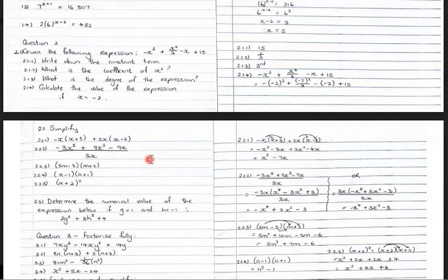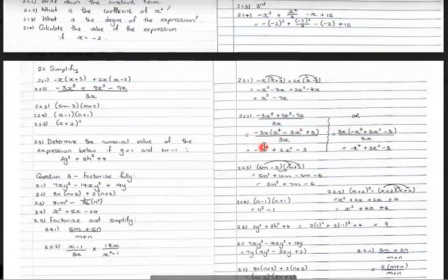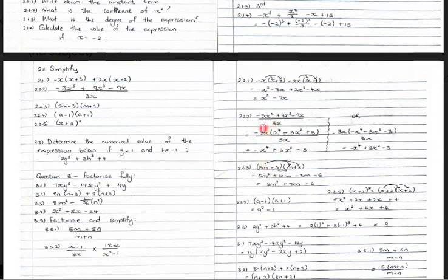Question 2.2.2: you have negative 3x to the power 5 plus 9x cubed minus 9x, all divided by 3x. You must factorize, looking for the highest common factor, which is negative 3x. Pull out negative 3x, opening brackets to write what's left: x to the power 4 minus 3x squared plus 3, all divided by 3x. The 3x cancels with 3x in the denominator, leaving the negative outside. To remove the brackets, the sign of each term inside changes: you get negative x to the power 4 plus 3x squared minus 3.